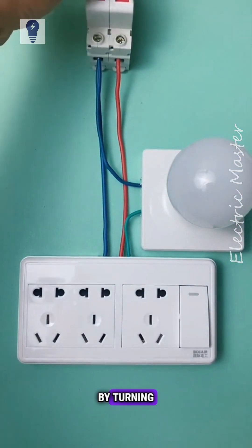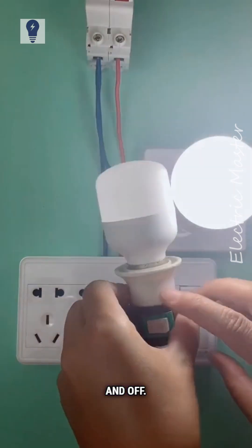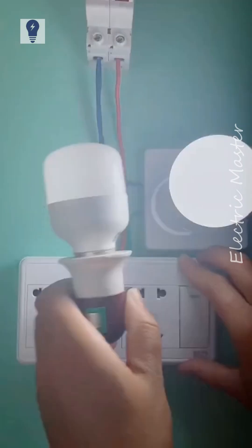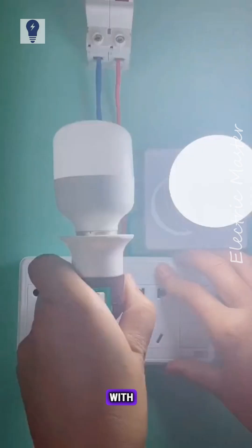Once installed, we'll test it by turning on the power. Test the light on and off. The socket should always have power. This is how to wire a 15-hole socket with a single switch.